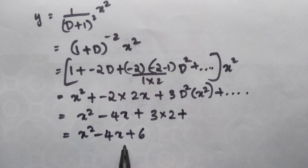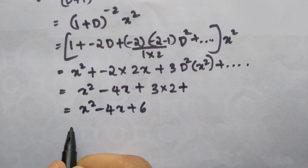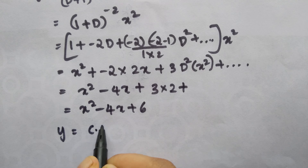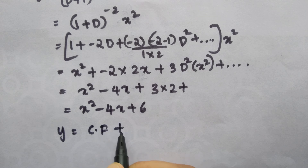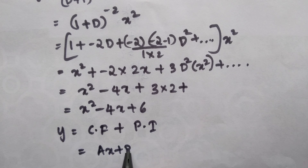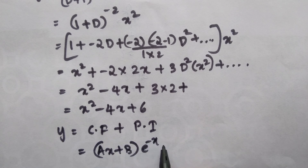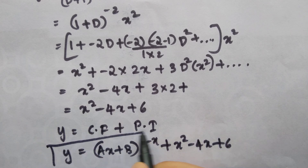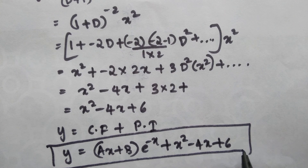This is our particular integral. The complete general solution is y equals complementary function plus particular integral, which gives y equals ax plus b into e raised to minus x plus x square minus 4x plus 6. This is our final answer.